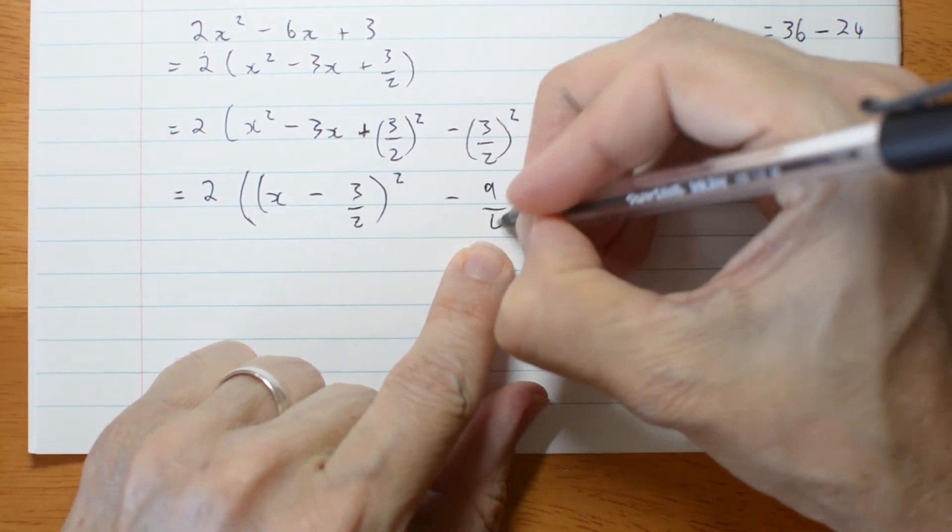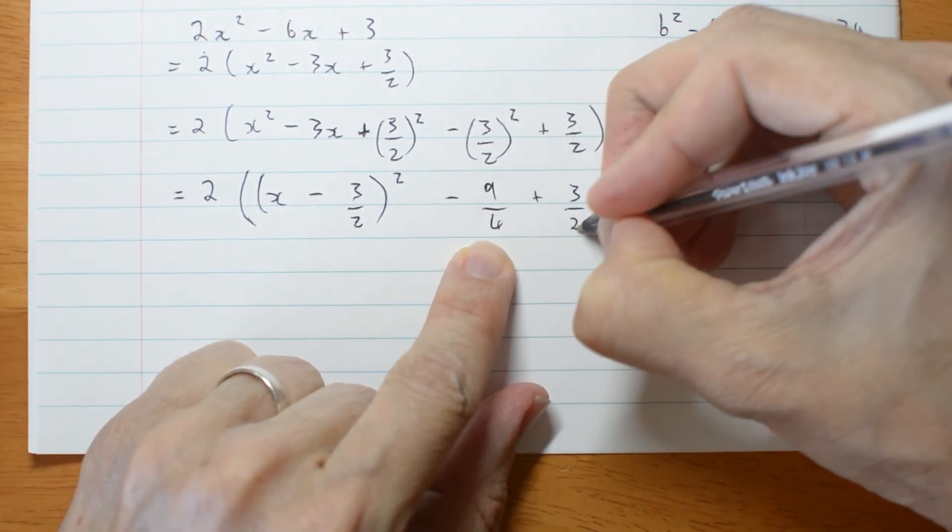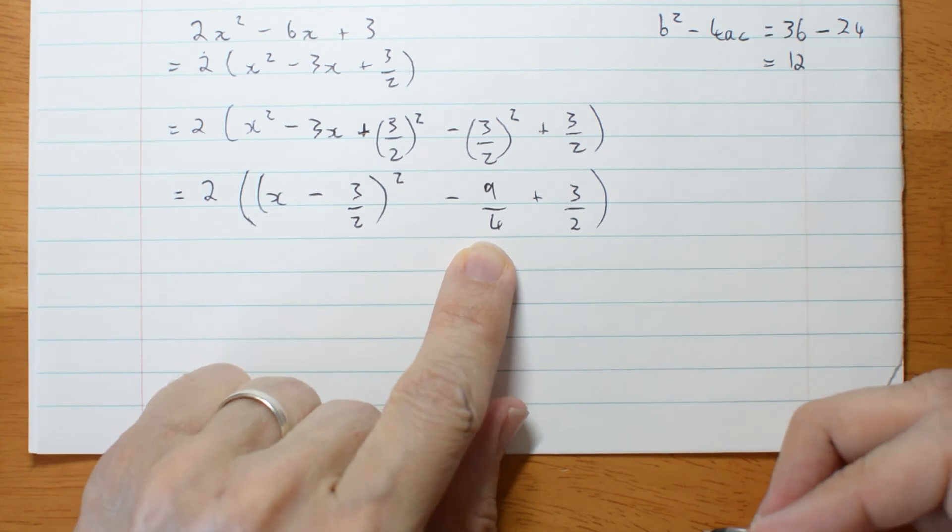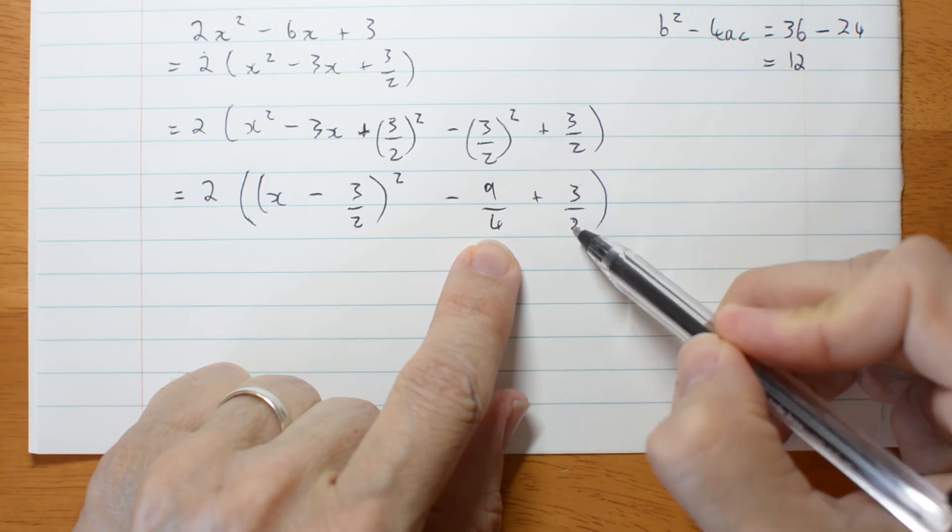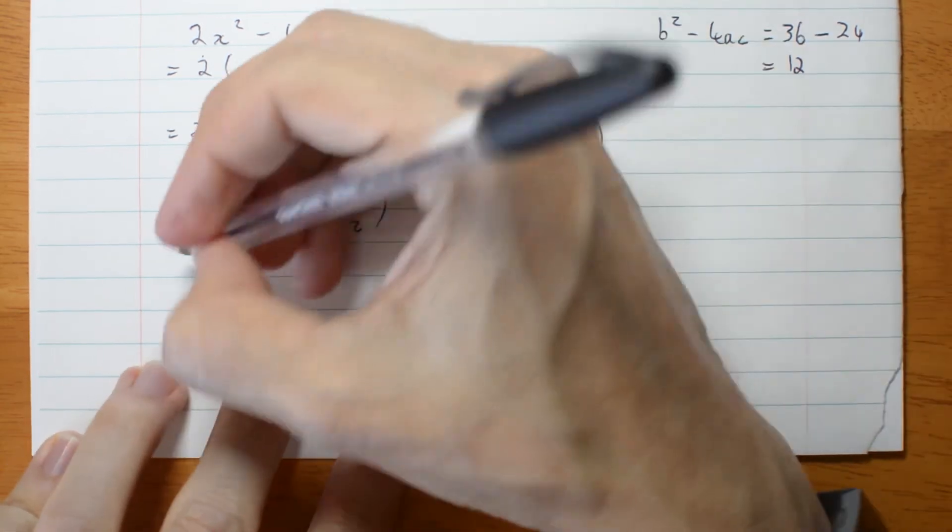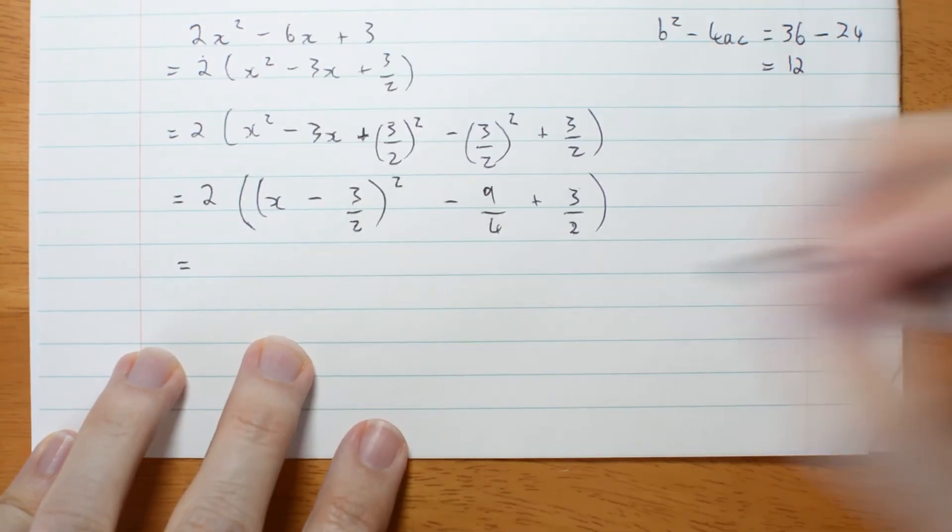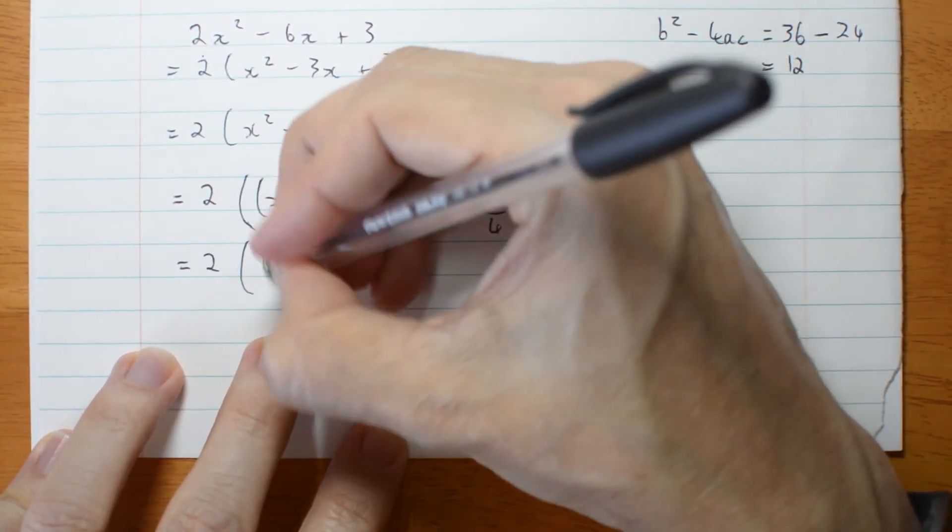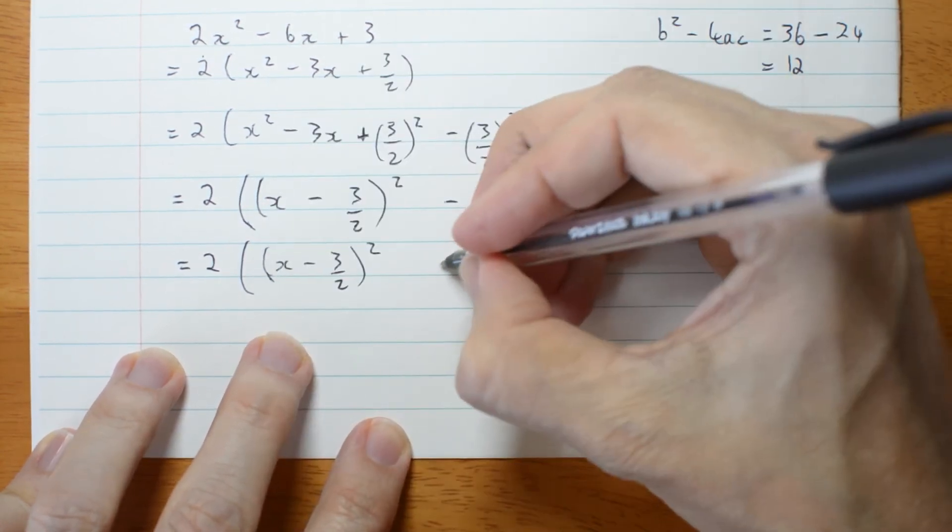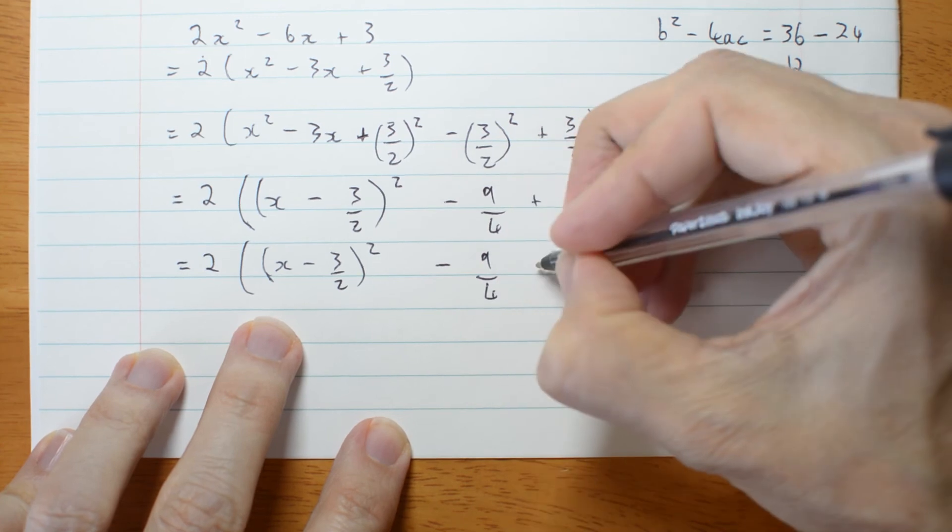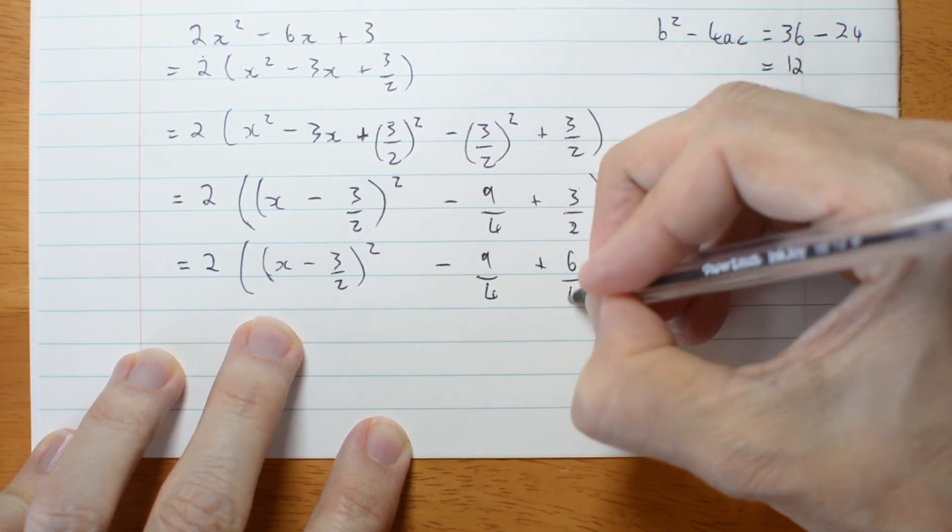Now what's this? Minus 9 on 4 plus 3 on 2. Well, 3 on 2 is 6 on 4. Shall I write that just to make sure it's extra clear? 2 times x minus 3 on 2 squared minus 9 on 4 plus 6 on 4.